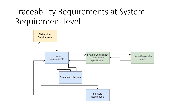System requirements should be traceable to system architecture, because based on system requirements we prepare the system architecture. Also, based on system requirements, software requirements will be extracted — software requirements will get derived from system requirements. So we must ensure traceability to software requirements as well. In summary, system requirements are traceable upward to stakeholder requirements, and for verification, to system qualification test specification and results; then downward to system architecture and software requirements.